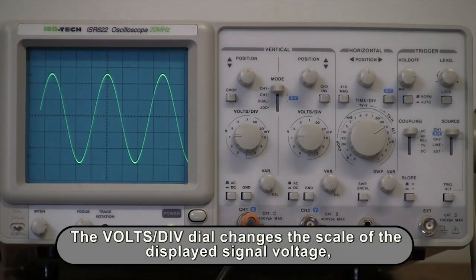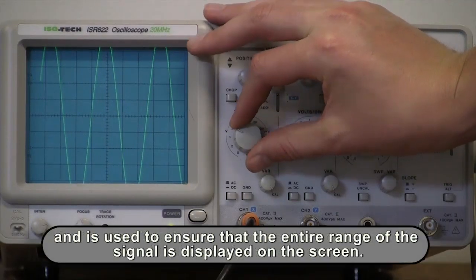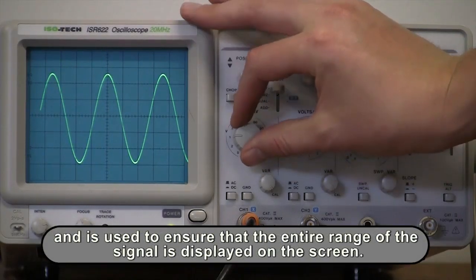The volts per division dial changes the scale of the displayed signal voltage and can be used to ensure that the entire range of the signal is displayed on the screen.